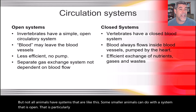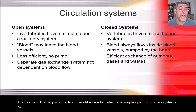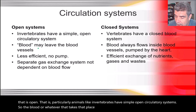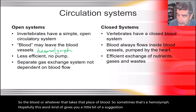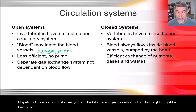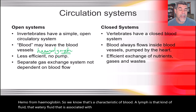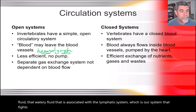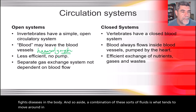Animals like invertebrates have simple open circulatory systems. The blood, or whatever takes the place of blood, is sometimes called haemolymph. 'Hemo' comes from haemoglobin, a characteristic of blood, and 'lymph' is the watery fluid associated with the lymphatic system which fights diseases. A combination of these fluids tends to move around in the open system of many invertebrates.